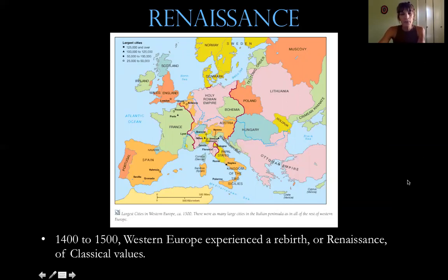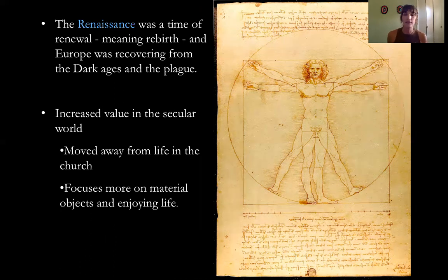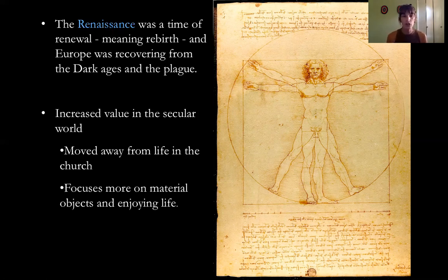When we talk about the Renaissance period, we typically talk about the beginning being around 1400 until about 1500. This is when Western Europe experienced a rebirth — a Renaissance of classical values. After a really difficult time like the plague, this would have been a time of recovery, of being excited to be alive. If you made it through the plague you felt pretty lucky. And so there's a slight move away from the church and an increased interest in the secular world, in enjoying one's material surroundings and really just beginning to enjoy life, understanding just how frail life can be.